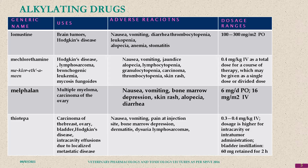Mechlorethamine is used in Hodgkin's disease, lymphosarcoma, bronchogenic leukemia, and mycosis fungoides. Melphalan is used in multiple myeloma and carcinoma of the ovaries, which is very common in females and is usually detected in adulthood. Thiotepa is used in breast cancer, ovarian cancer, and bladder cancer. Many times these drugs are used alternatively.